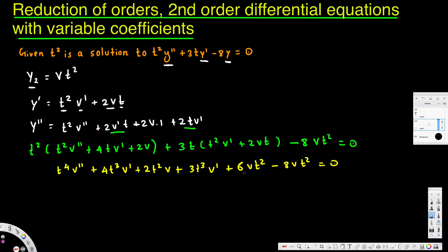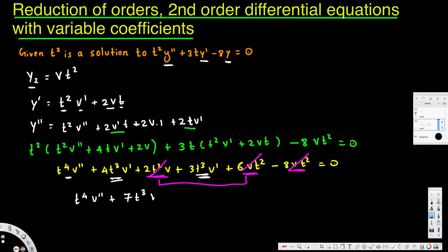Now we identify the v power-one terms: 6vt squared, minus 8vt squared, and 2vt squared. Adding 6vt squared and 2vt squared gives plus 8vt squared, which cancels with minus 8vt squared — confirming our work is correct. Collecting the remaining like terms, we get t to the 4th v double prime plus 7t cubed v prime equals zero.